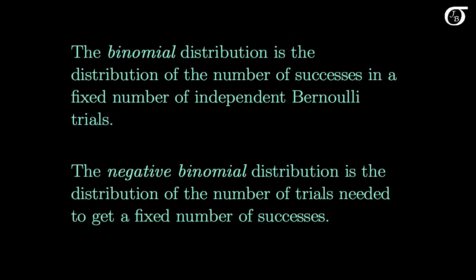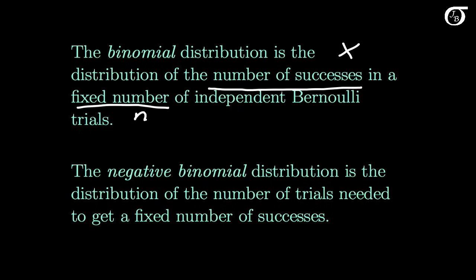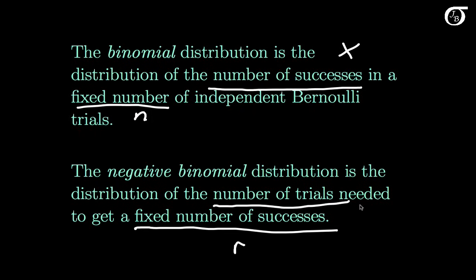A random variable with a negative binomial distribution can sometimes be confused with one that has a binomial distribution, and that confusion can cause problems. The binomial distribution is the distribution of the number of successes — the random variable x — in a fixed number of independent Bernoulli trials, where that fixed number of trials is called n. But in the negative binomial distribution, the number of successes is the fixed number, called r, and the number of trials needed to get that number of successes is the random variable x.